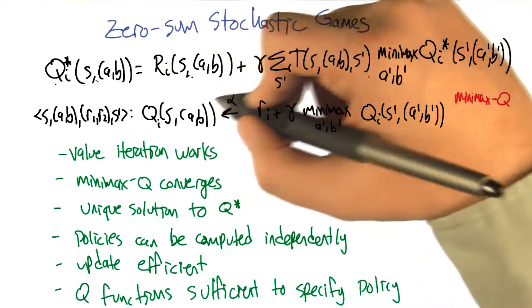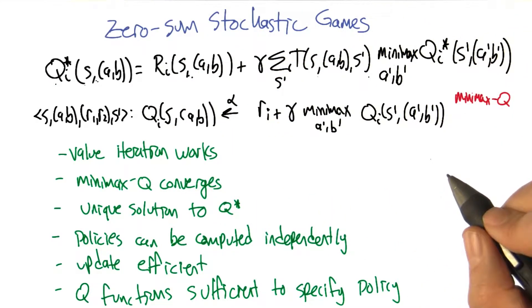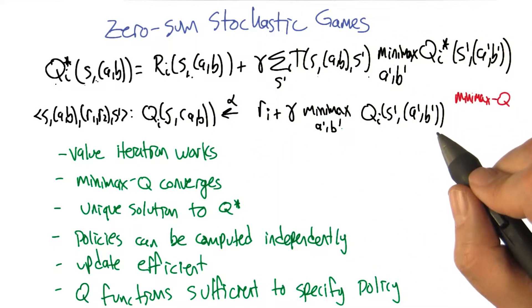So value iteration works. This minimax Q algorithm converges under the same kinds of conditions that Q learning converges. So we get this nice Q learning analog in this multi-agent setting.